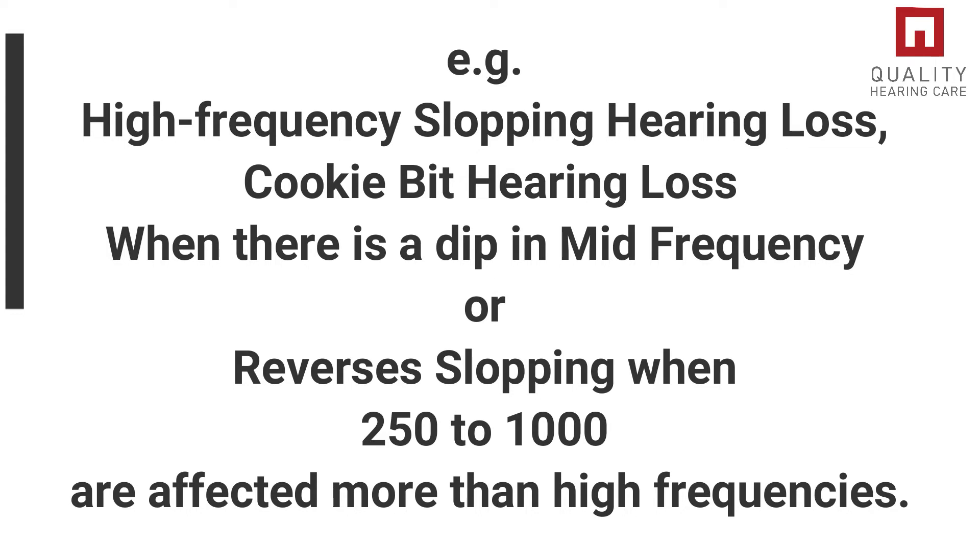Next to severity, it is also essential to understand the configuration of the hearing loss — for example, high-frequency sloping hearing loss, cookie bite hearing loss when there is a dip in the mid frequencies, or a reverse sloping hearing loss when 250 and 1000 Hz are affected more than the high frequencies. The next important test is word recognition score, which is measured as the number of correct responses to words presented at an audible level. This gives you an exact idea of your ability to hear spoken language. When all these tests are put together, it helps us create a management plan to improve communication ability.